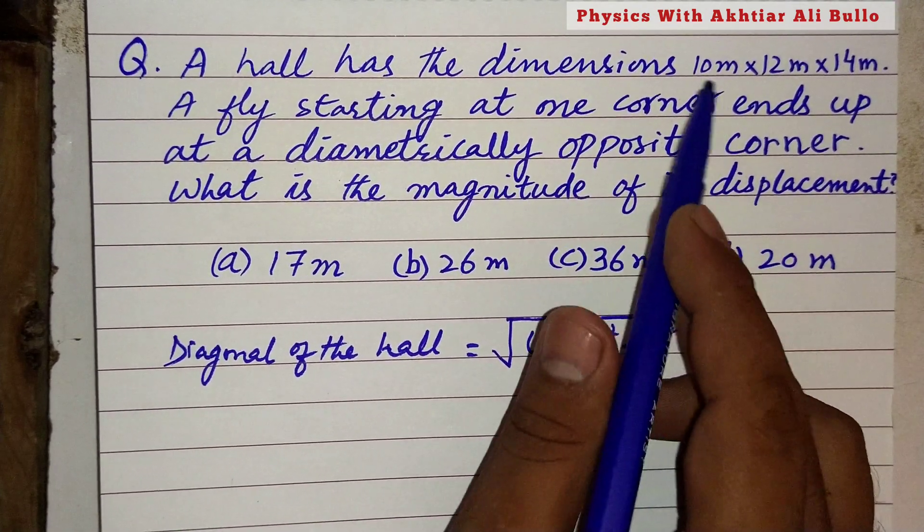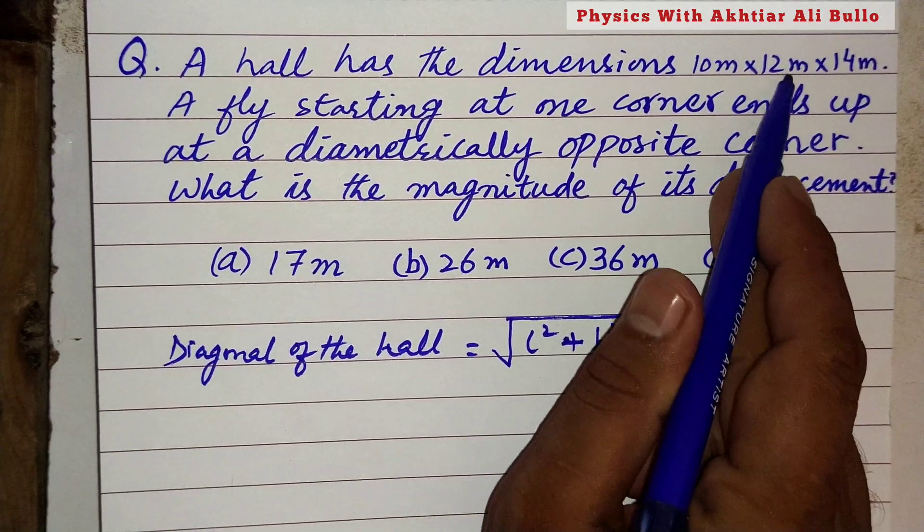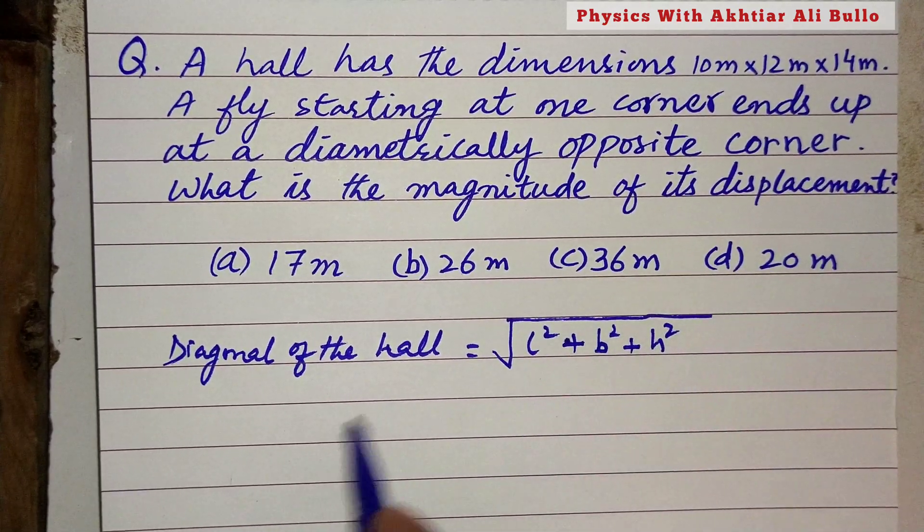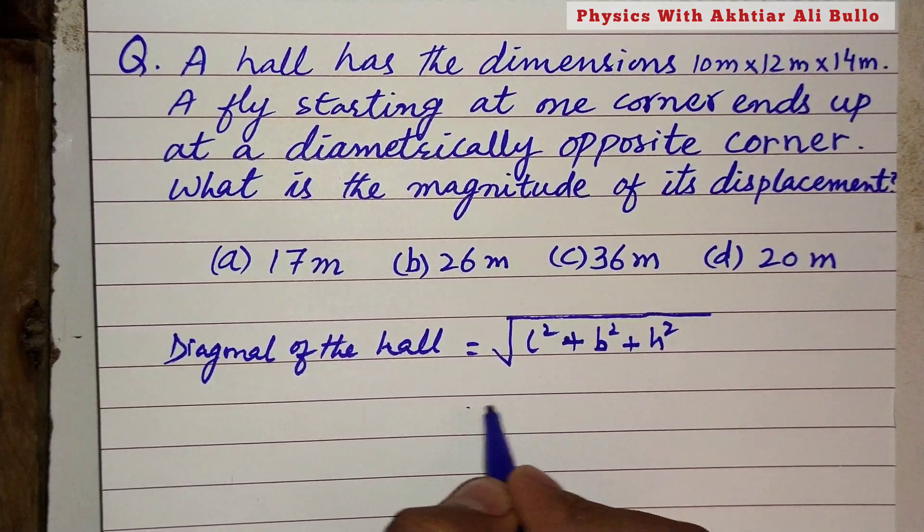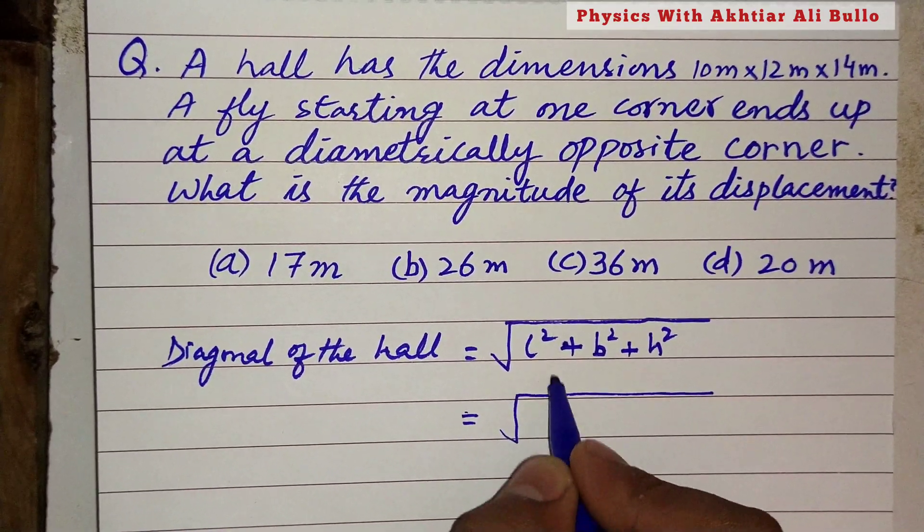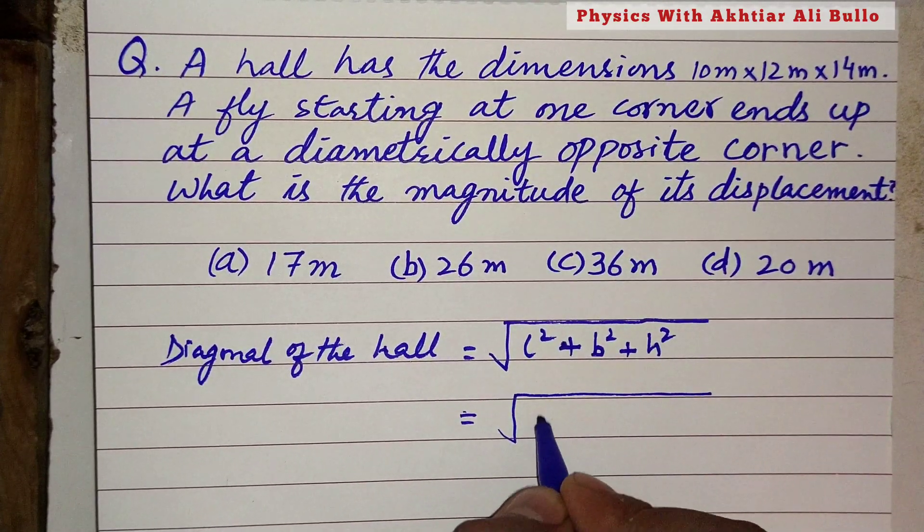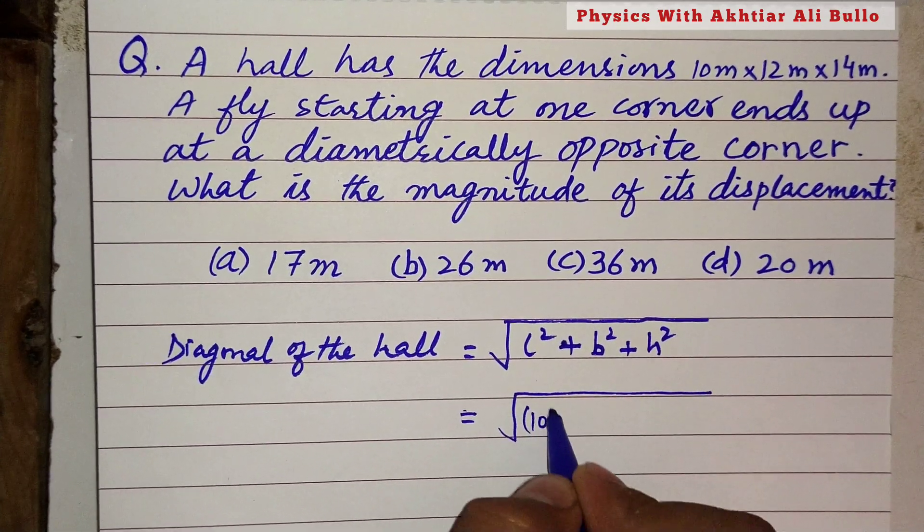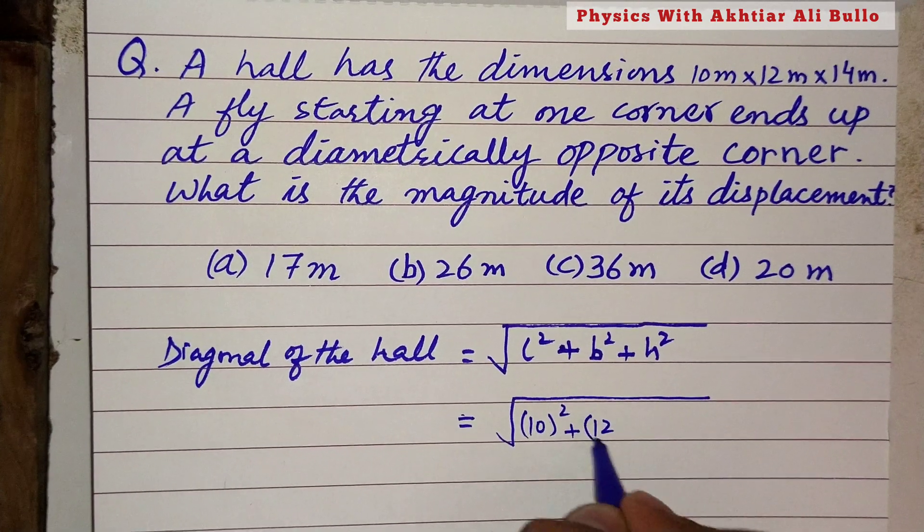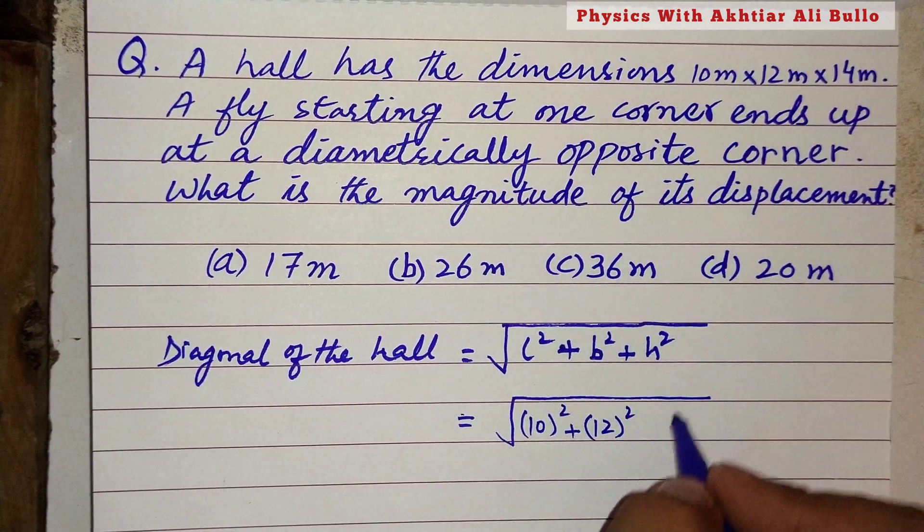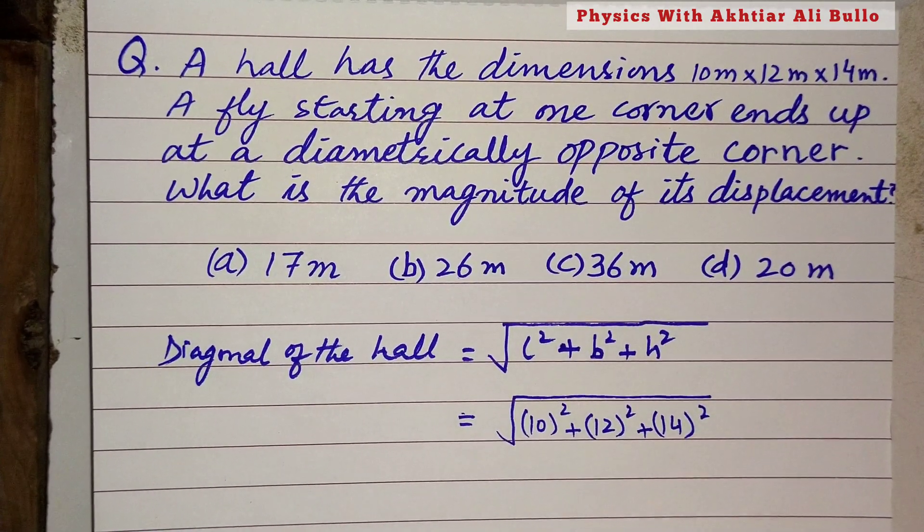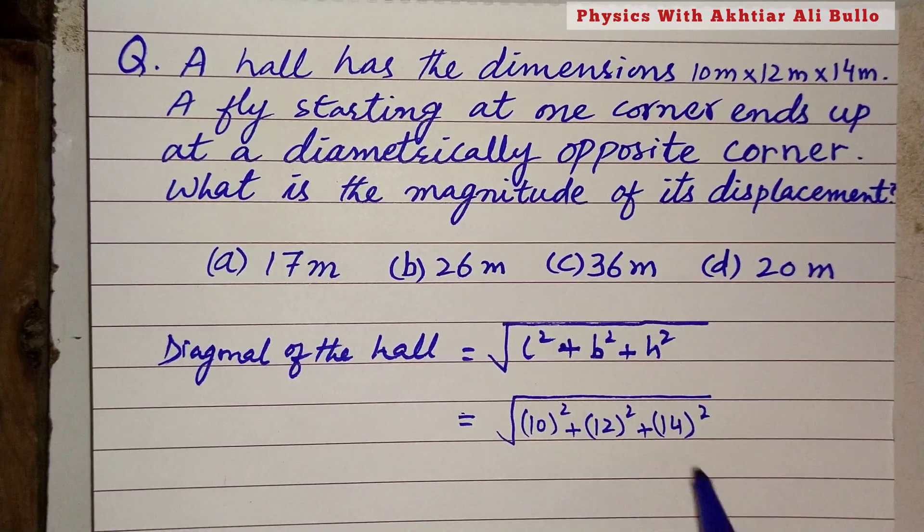As length is 10 meters, breadth is 12 meters, and height is 14 meters, we put these values into the formula: the square of 10 plus the square of 12 plus the square of 14.